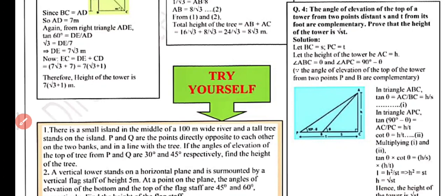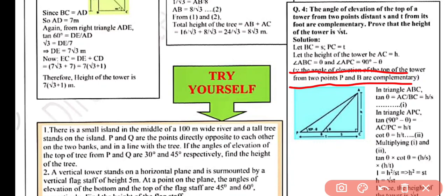The angle of elevation of the top of the tower from points P and B are complementary. In triangle ABC: tan θ = AC/BC = H/S — this is equation 1. In triangle APC: tan(90° − θ) = AC/PC = H/T, and since tan(90° − θ) = cot θ, we get cot θ = H/T — this is equation 2.